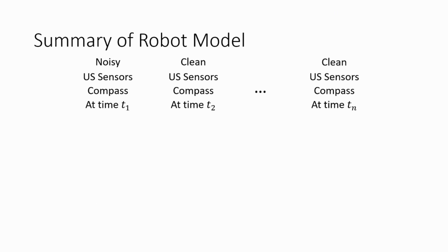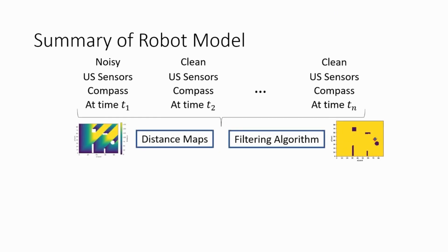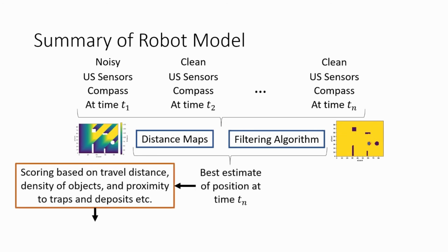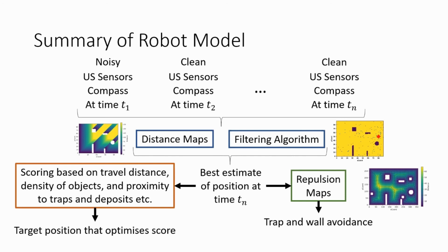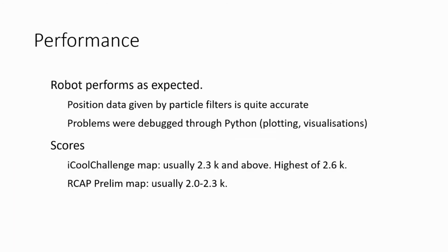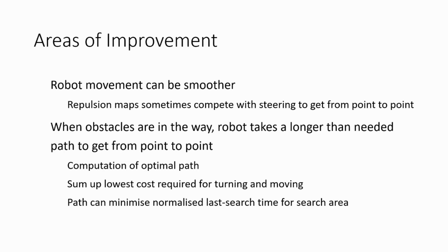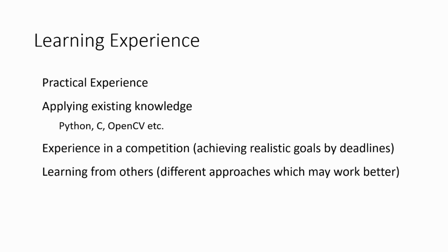In summary, the ultrasound sensors and compass readings are fed into the distance maps and filtering algorithm to give us the best estimate of the robot's position. This precise position data is then fed into our scoring system to determine a target position that optimizes the score, and into our repulsion maps for trap and wall avoidance. In general, the robot performs as expected because the position data given by the particle filters is quite accurate. Problems were developed and solved in Python, where we plot and visualize the maps. Score-wise, we manage to do decently. For future work, we can make robot movements smoother by finding a better way to incorporate trap and wall avoidance into steering, and optimize the path rather than just the target positions. Through this experience, I applied skills in computer vision, Python, and C programming in a practical project, and also learned soft skills like setting realistic goals and learning different approaches from matched videos online.